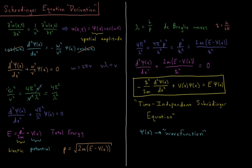Now let's deal with the ω²/v² term. ω is the angular frequency, equal to 2πν, and the velocity of a wave equals its frequency times its wavelength, v = νλ. So ω² = 4π²ν², and v² = ν²λ². The ν² cancels, leaving 4π²/λ². So our equation becomes: the second derivative with respect to x of ψ(x) plus 4π²/λ² times ψ(x) equals zero.